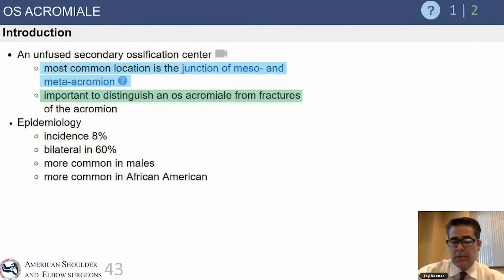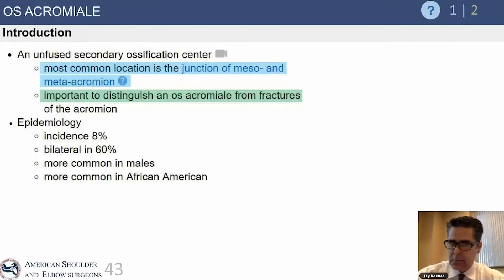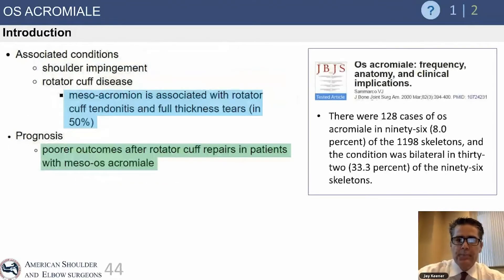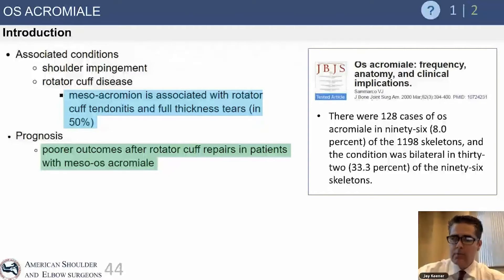The most common location is in the mid acromion. The incidence is between six and eight percent, and they are seen bilaterally in 60 percent of patients. They are definitely more common in African Americans and slightly more common in males. They are usually not symptomatic and are typically seen as an incidental finding during workup for rotator cuff pain.